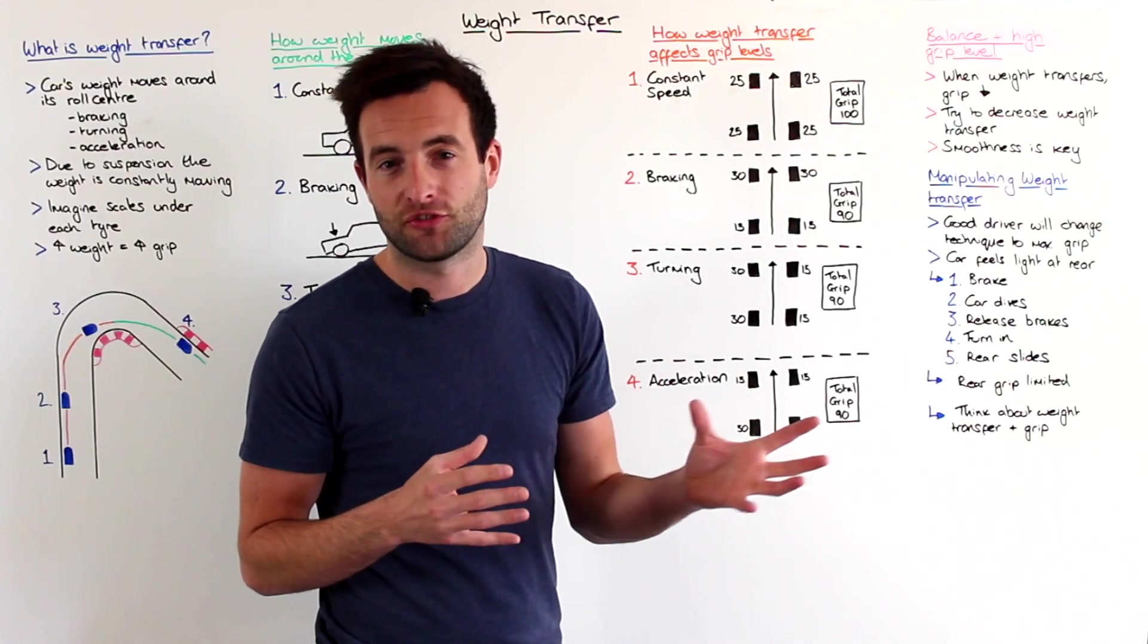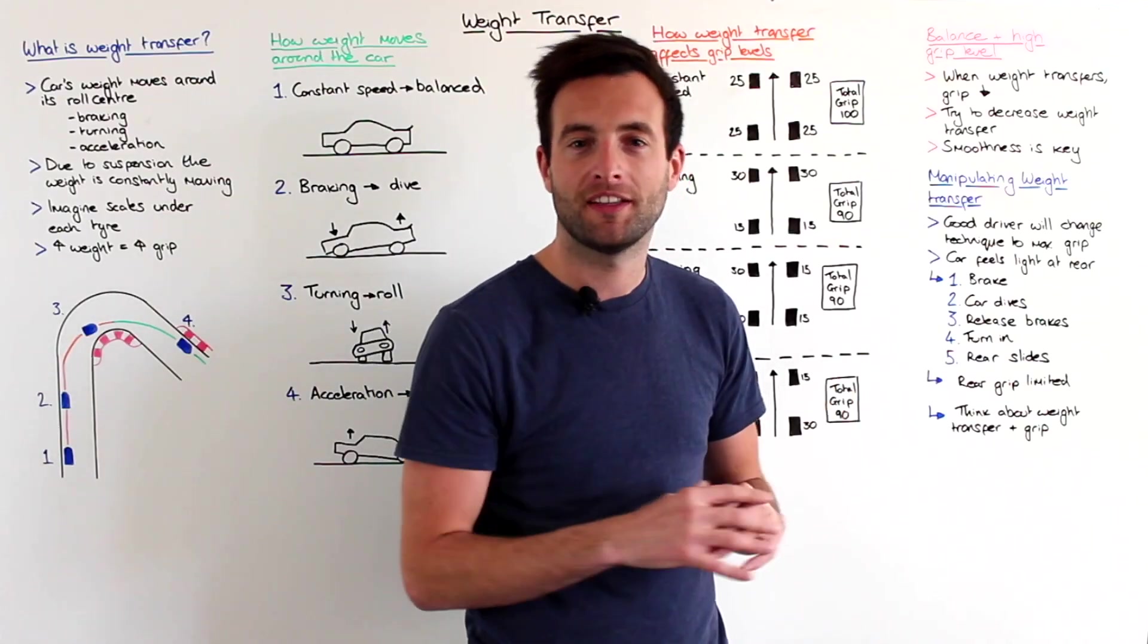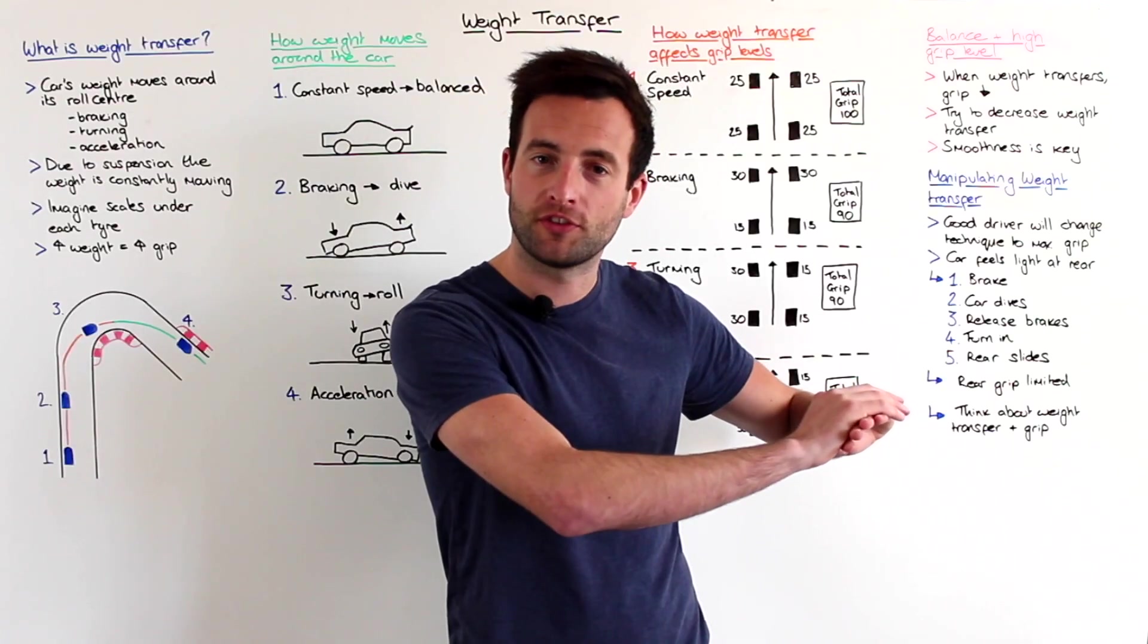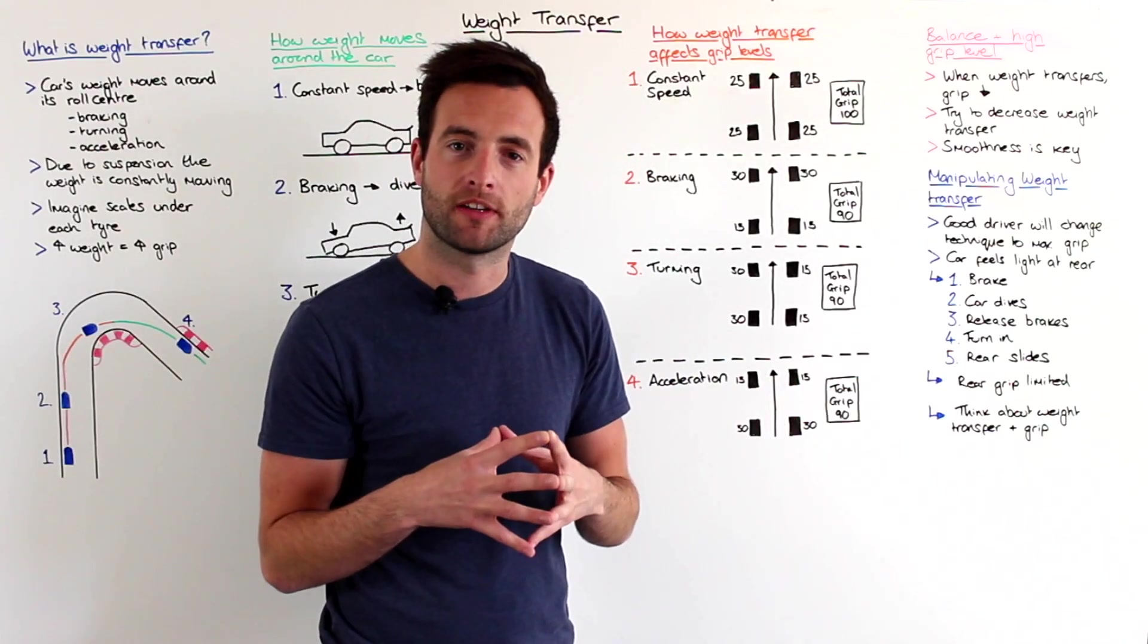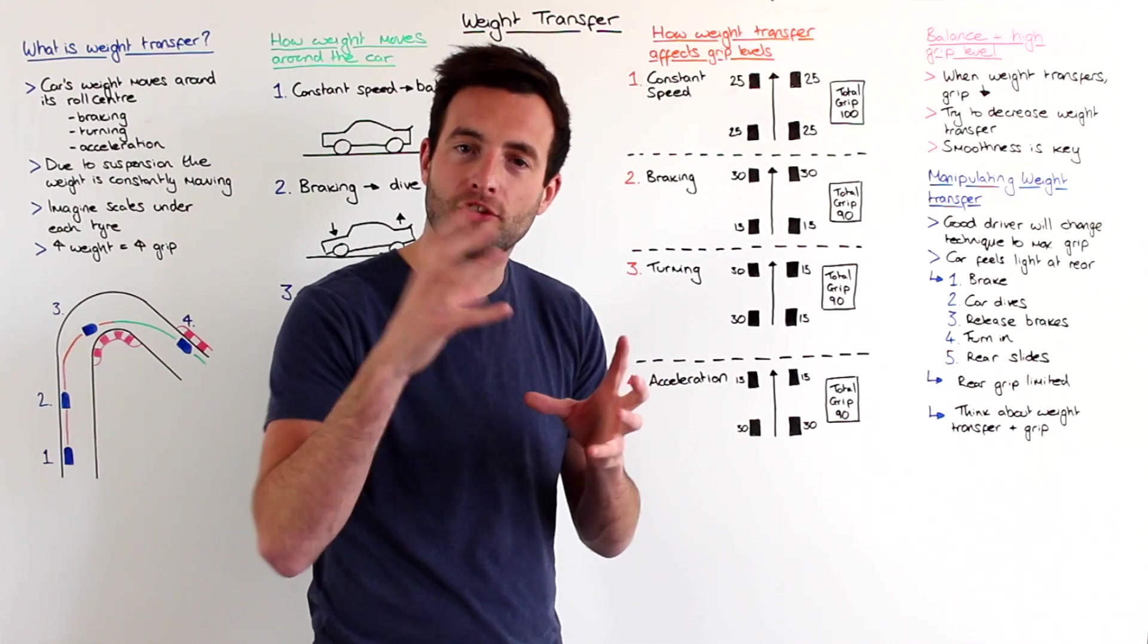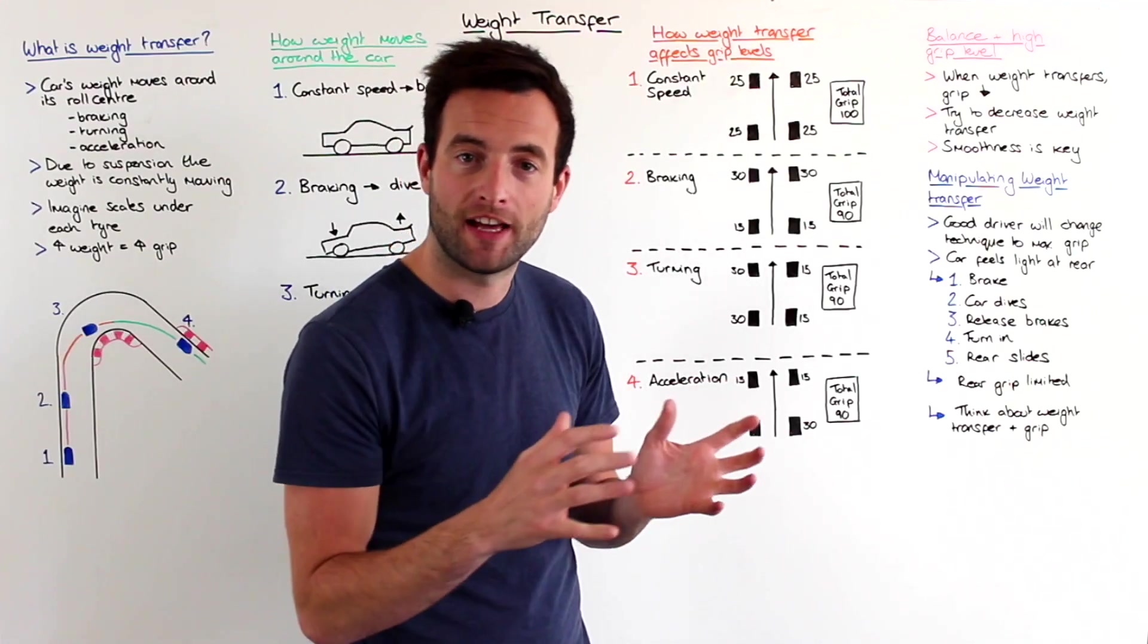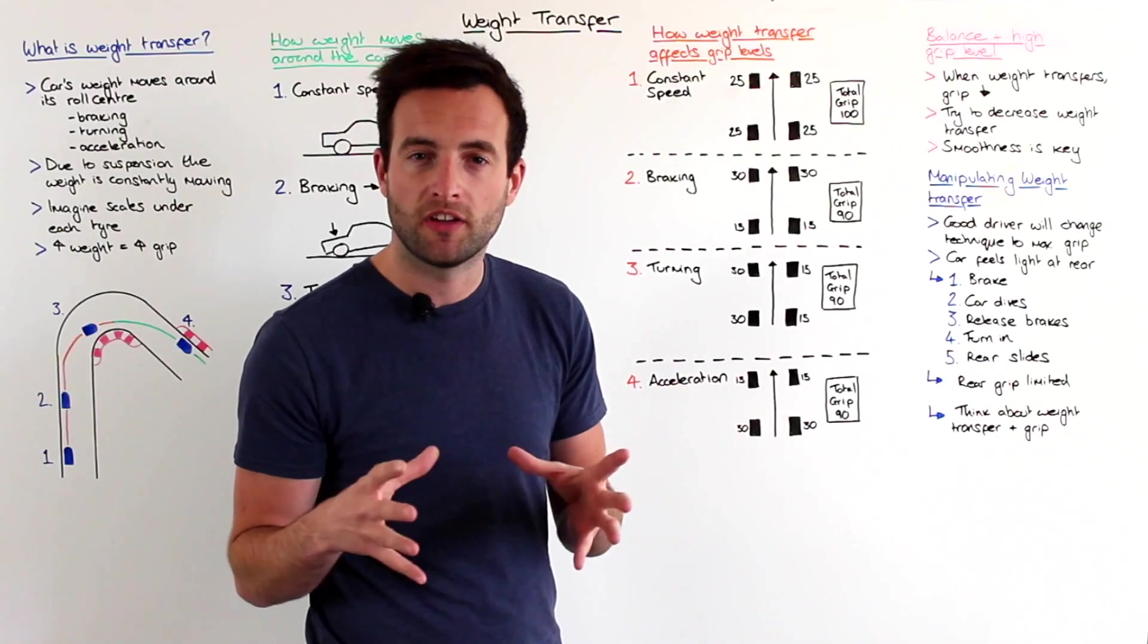As I mentioned in the last tutorial, imagine trying to push somebody over. If you push them really hard, it's likely that they'll fall over. Whereas if you push them slowly, you can still put the same amount of force into them, but they'll likely remain standing. And it's the same with your driving. If you approach the corner and turn in really, really hard, you'll spike the weight transfer and the car will slide actually earlier than if you increase the steering angle nice and gently and move the weight to the outside of the car nice and smoothly.